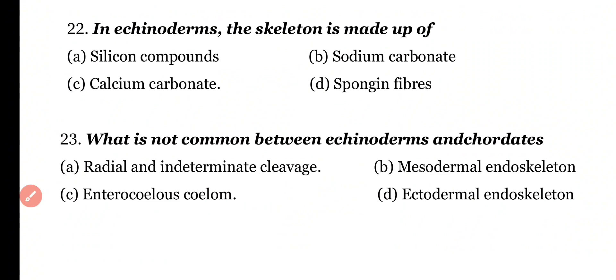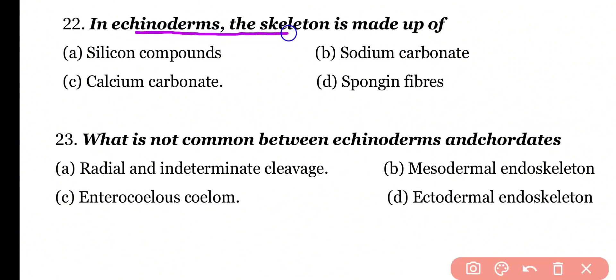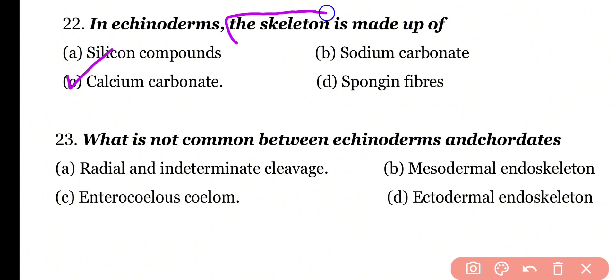Question 22: In Echinoderms, the skeleton is made up of silicon compound, sodium carbonate, calcium carbonate, or spongin fibers? Correct answer is Option C. The skeleton of Echinoderms is made of calcium carbonate.